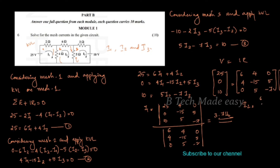For i2, we replace the second column with [25, 0, 10], keeping the rest the same: [6, 25, 0; 4, 0, 5; 0, 10, minus7], divided by the original determinant. The value of i2 is 0.675.